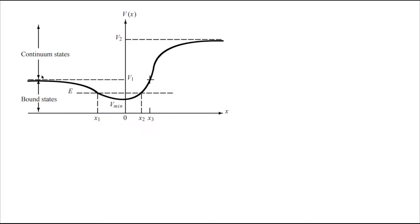Now let's discuss the general one-dimensional potential V(x). Here on the x-axis, x goes from minus infinity to plus infinity, such that the value of V at x equal to minus infinity is V1 and the value of V at x equal to plus infinity is V2.